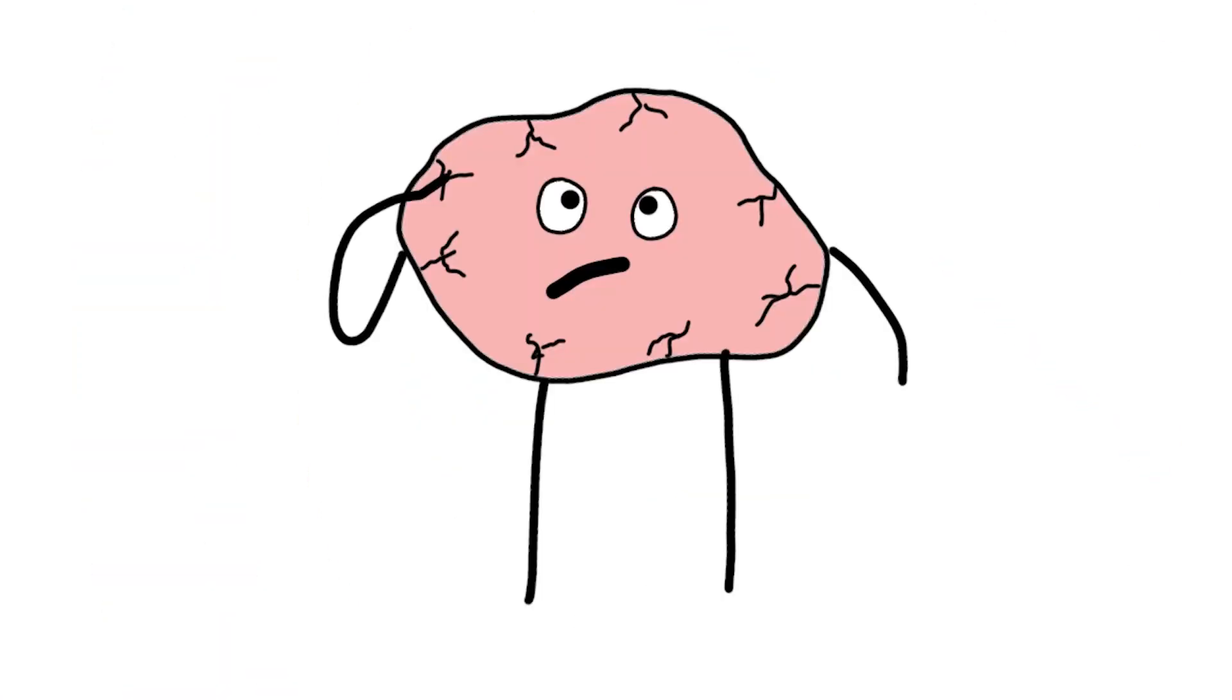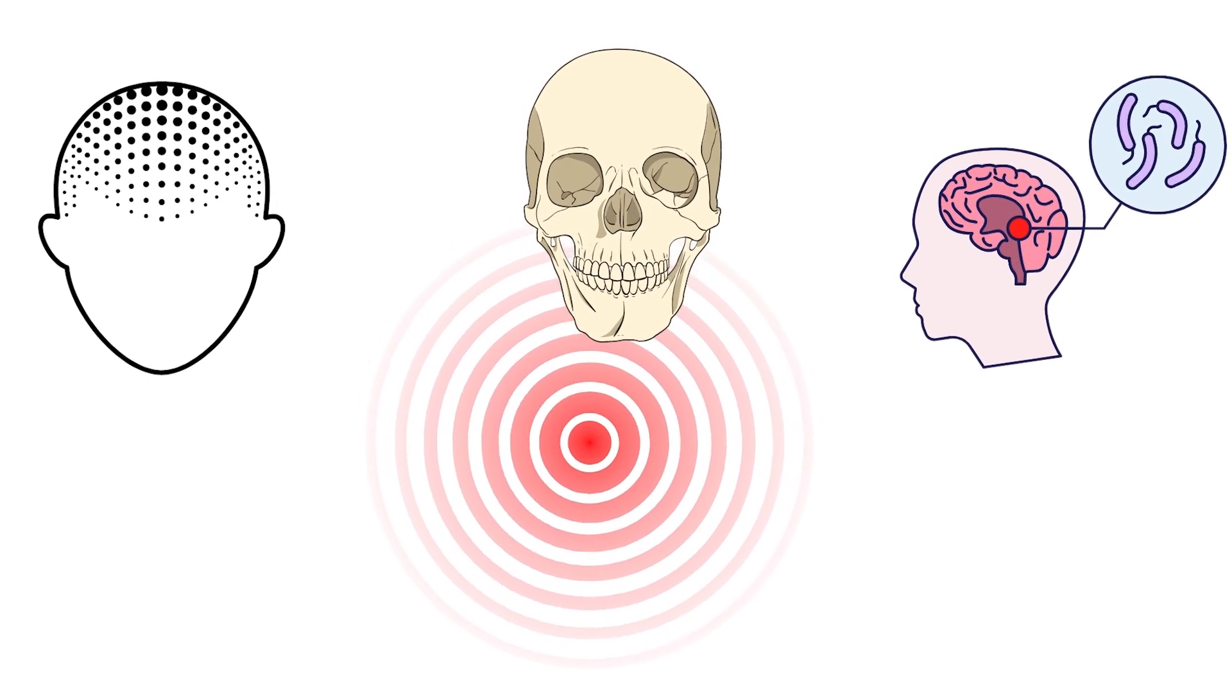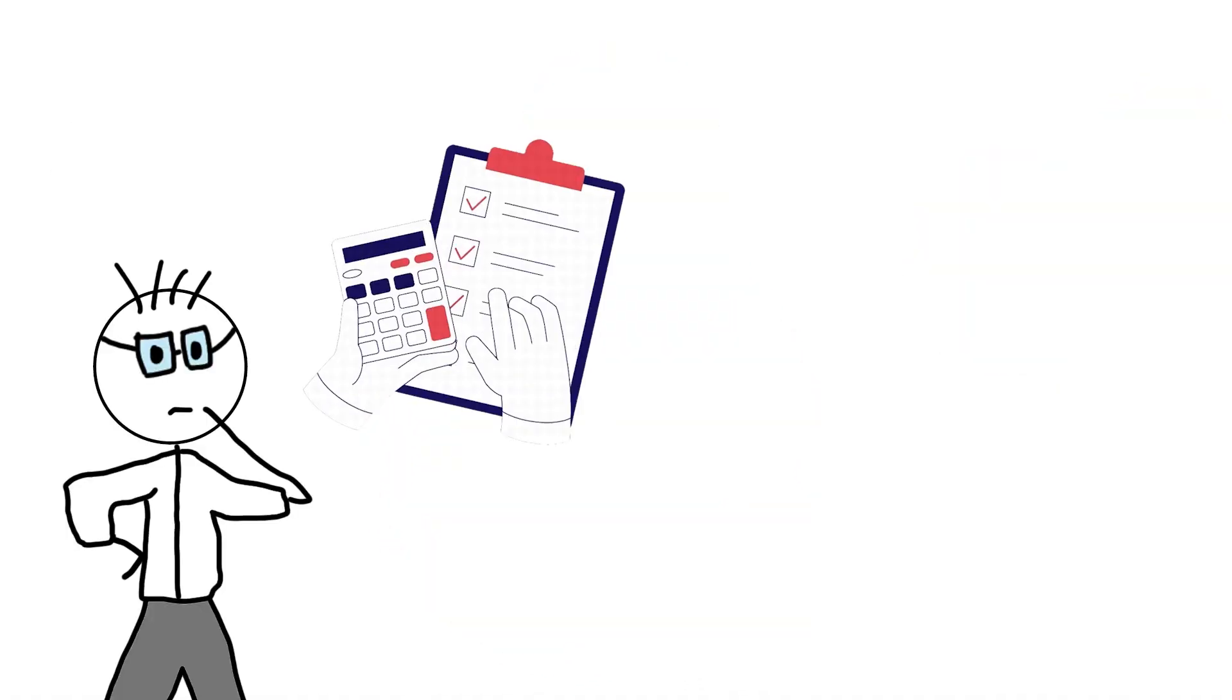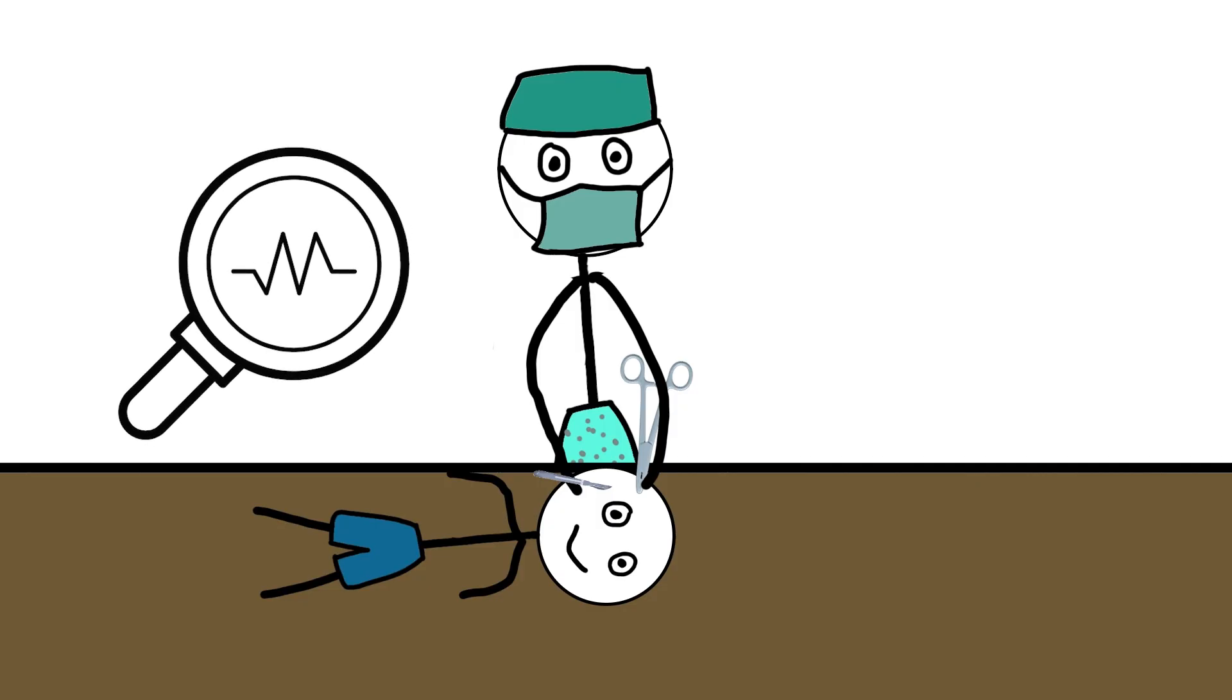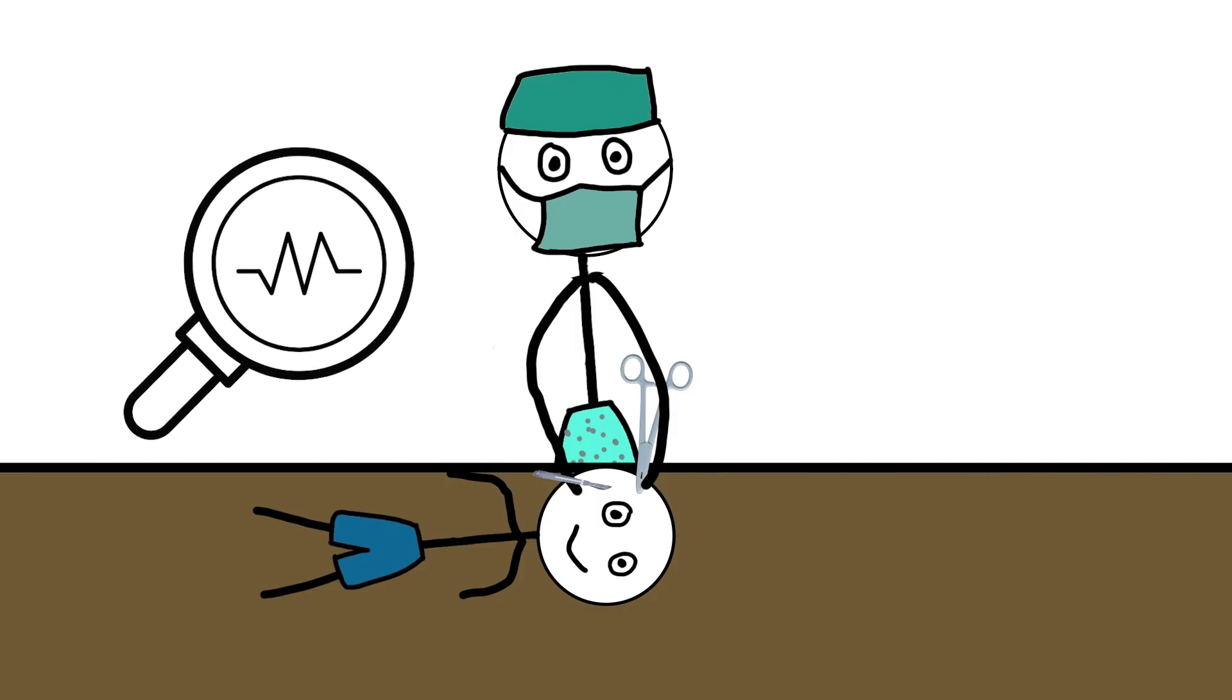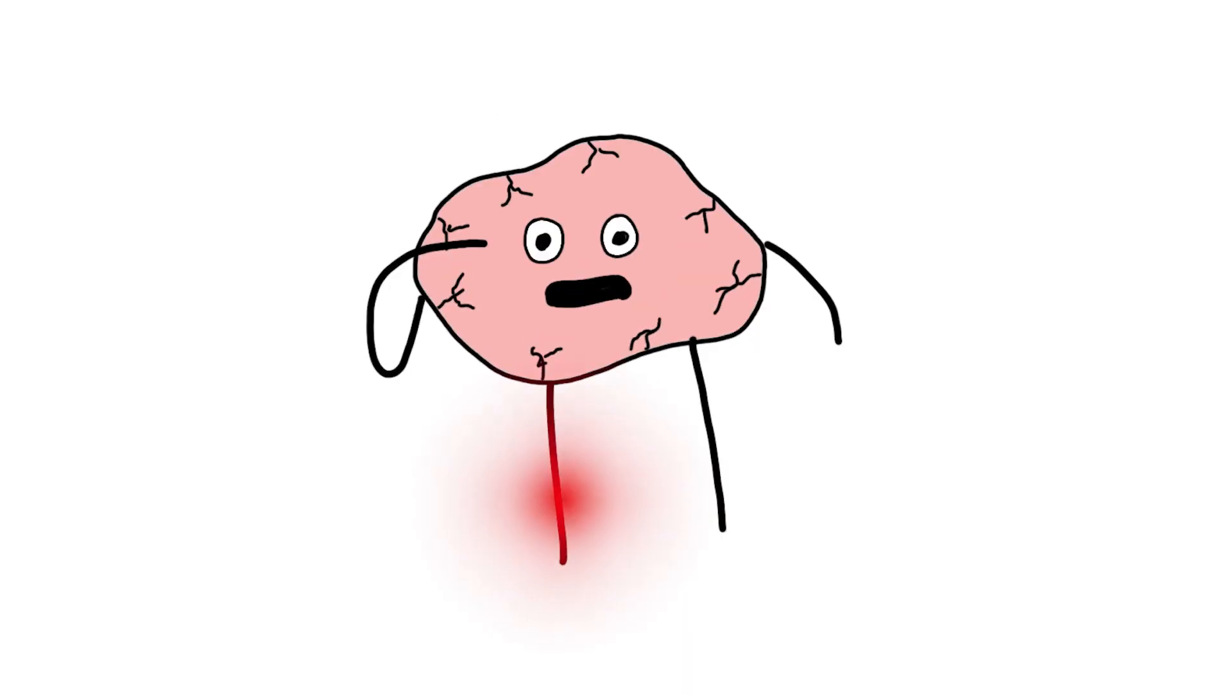What does that tell us? That the thinking organ itself is insensitive to direct injury in the way you'd expect. The pain you feel is from the surrounding tissues, scalp, skull, meninges, not the brain matter itself. This challenges our assumptions about brain pain. It also explains why brain surgery can be done while the patient is awake to monitor cognition, because the brain won't cry out. It's bizarre to consider the thing that thinks, feels, and reflects cannot itself feel pain in the way your skin does.